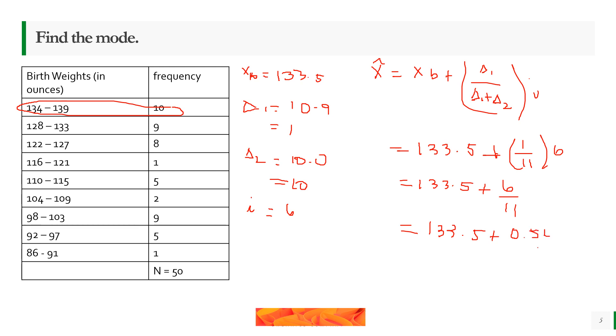133.5 plus 6 divided by 11 is 0.54. When we add them, the answer is 134.04. This is our mode. Notice, it's within the range of the modal class.